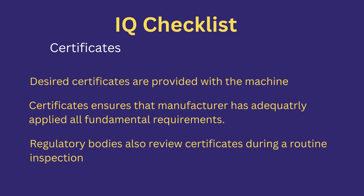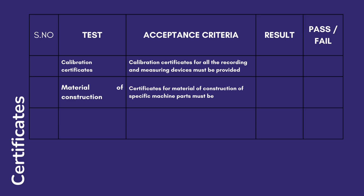Certificates are proof that the manufacturer has used the desired production specifications during manufacturing. In this test, it is verified that the desired certificates are provided with the machine. Regulatory bodies also review certificates during their routine inspection. Possible tests in this section include: Calibration certificates — calibration certificates for all recording and measuring devices must be provided. Material of construction — certificates for material of construction of specific machine parts must be provided.